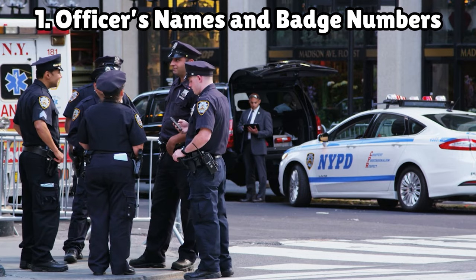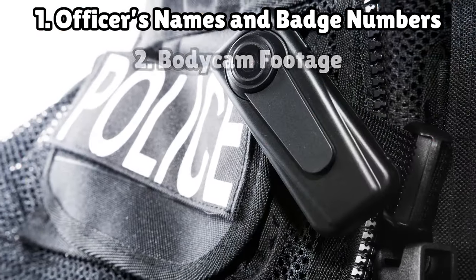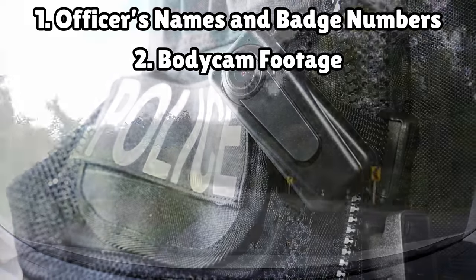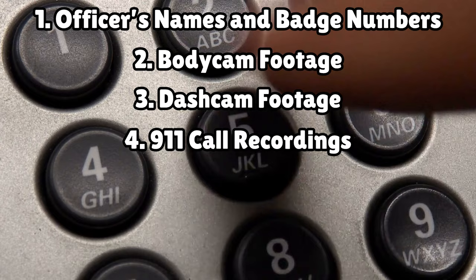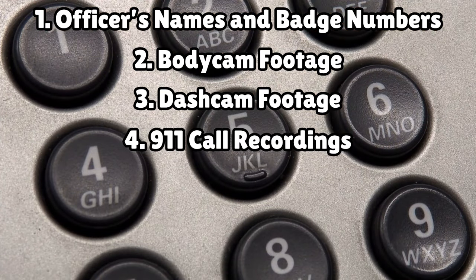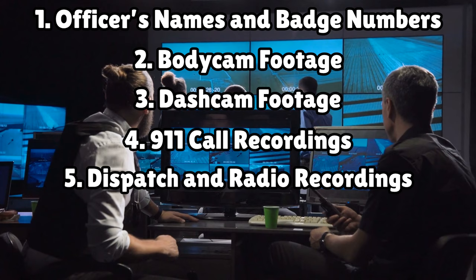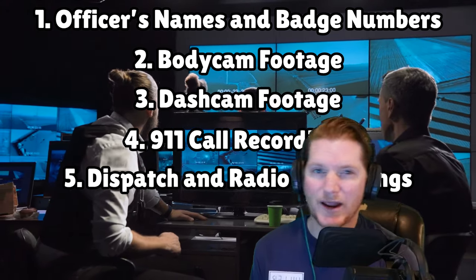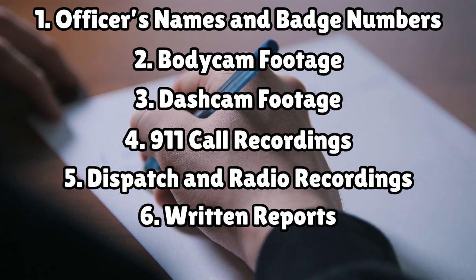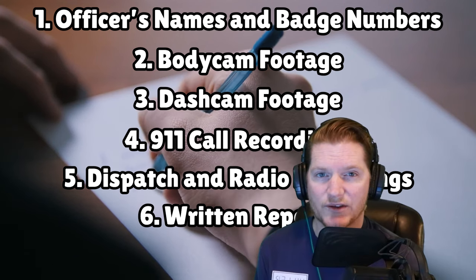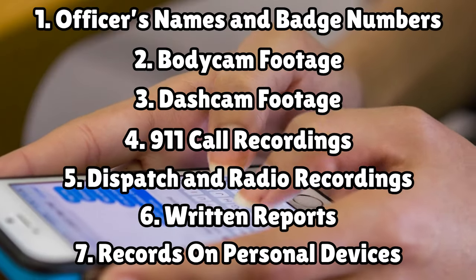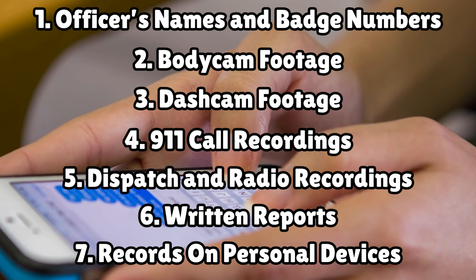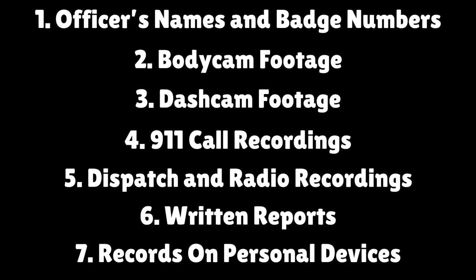Number 1: all officers' names and badge numbers that were involved in the incident. Number 2: all body cam footage from every officer involved. Number 3: all dash cam footage from each vehicle on scene. Number 4: any 911 or non-emergency call recordings related to the incident. Number 5: recorded dispatch and radio traffic — be sure to request 3 to 5 minutes before and after the incident. Number 6: all written reports from every officer that was present. Be sure to request copies of the field interview notebooks from each officer on scene. Finally, any video, audio, picture, or notes taken on an officer's personal device, including phone, during the incident.